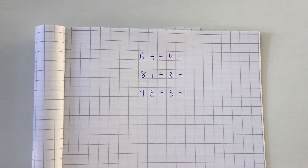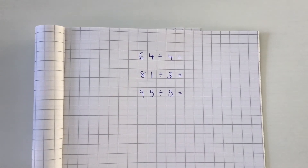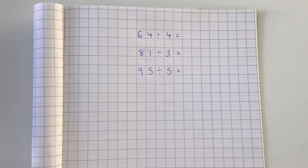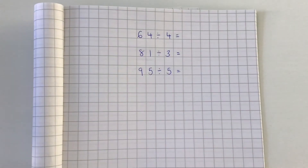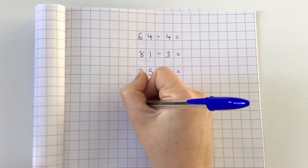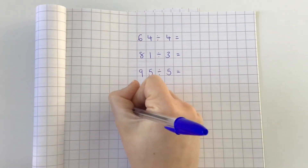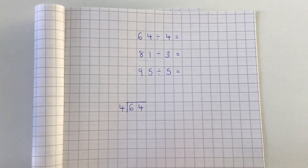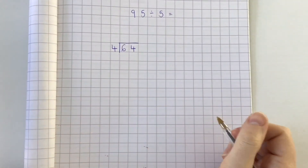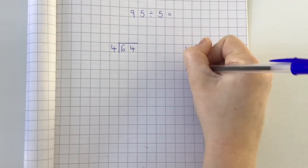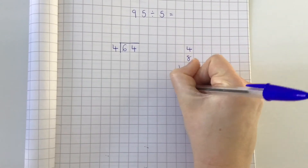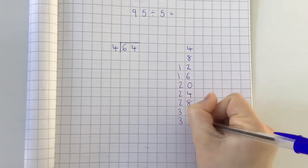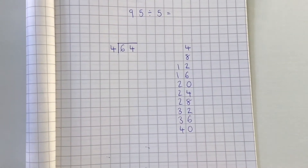Have a go at these three questions — pause the video and I'll go through the answers at the end. Let's see how you got on. First question: 64 divided by 4. I'm going to set out my short division with 4 on the outside and 64 on the inside. I'll write down my four times tables to help: 4, 8, 12, 16, 20, 24, 28, 32, 36, 40.